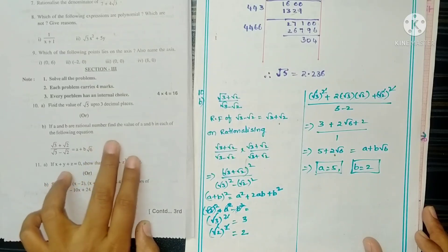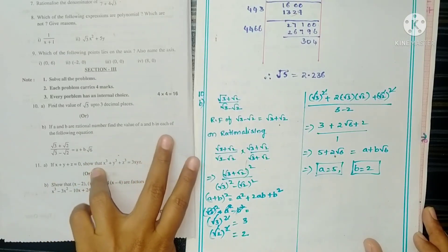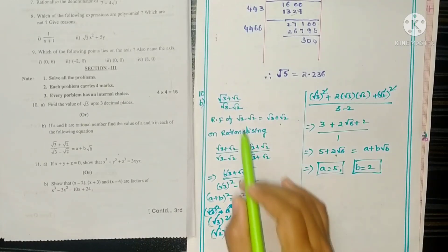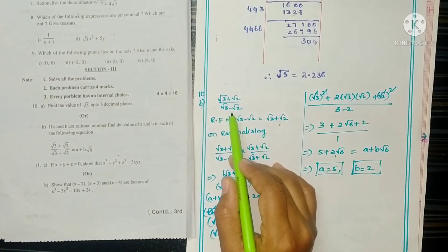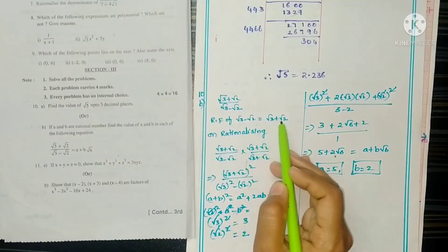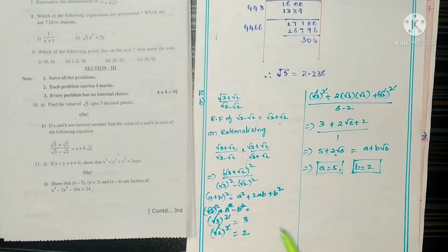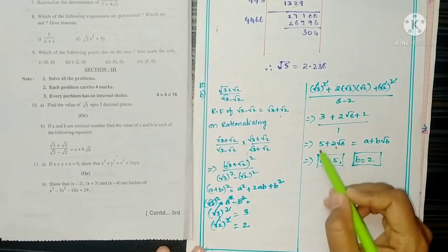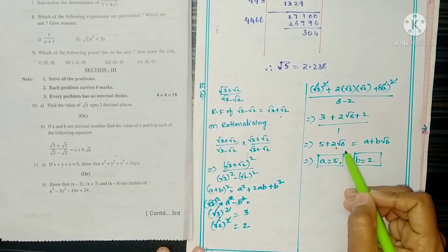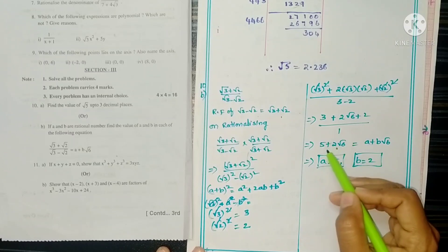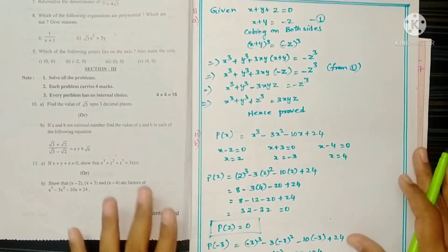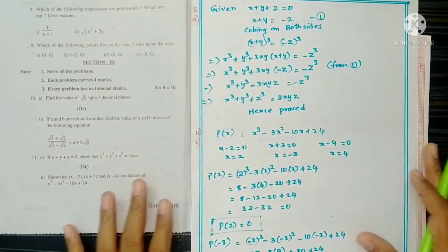Question 10b: If a and b are rational numbers, find the values of a and b. The denominator has a minus sign, so the rationalizing factor will have plus. After rationalizing, you get 5 + 2√6. Comparing both sides: a = 5 and b = 2.